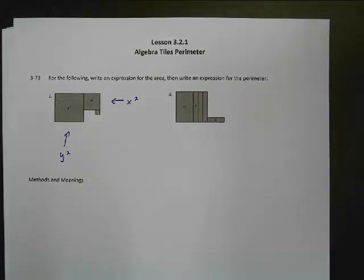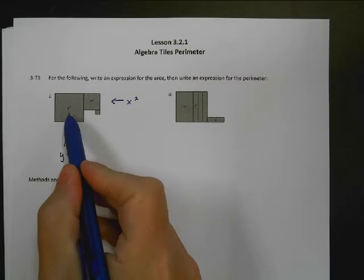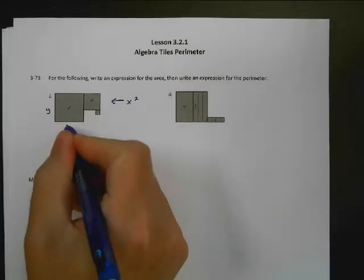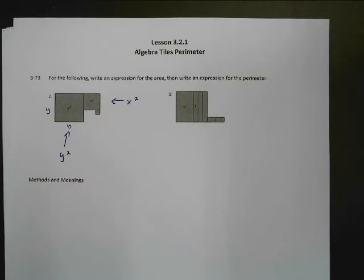So what we want to do here is we want to find the area of these shapes. All right, so if we know that this is y squared, then we know that it is y times y around that shape. And we want to find the perimeter, which is the outside of the shape. So that's y times y.